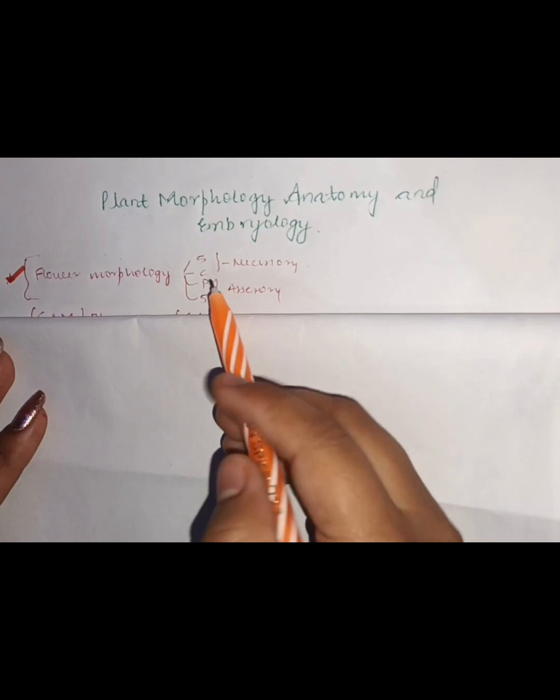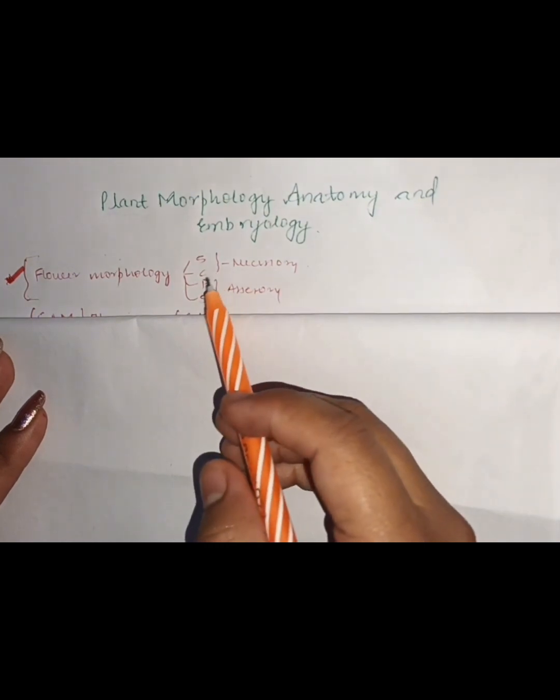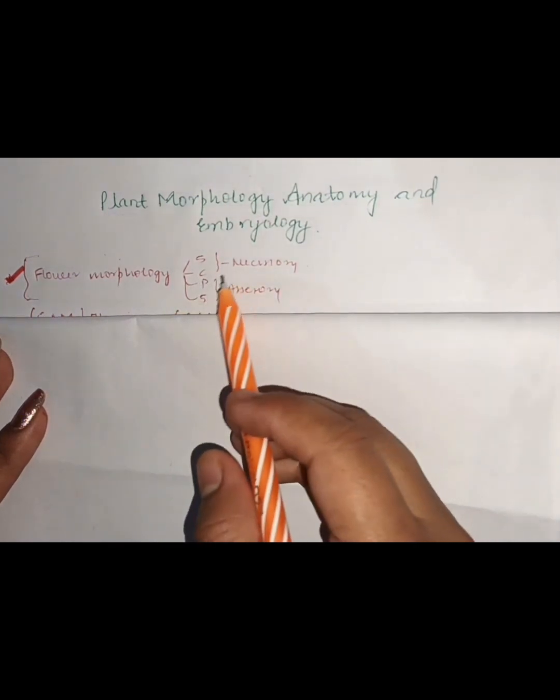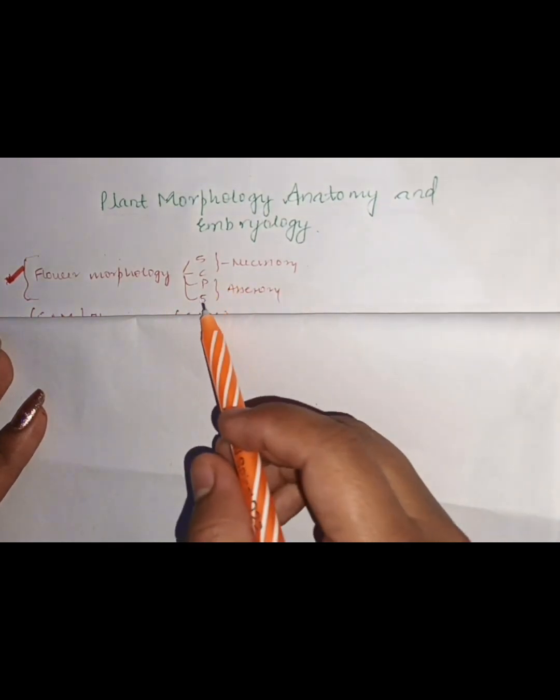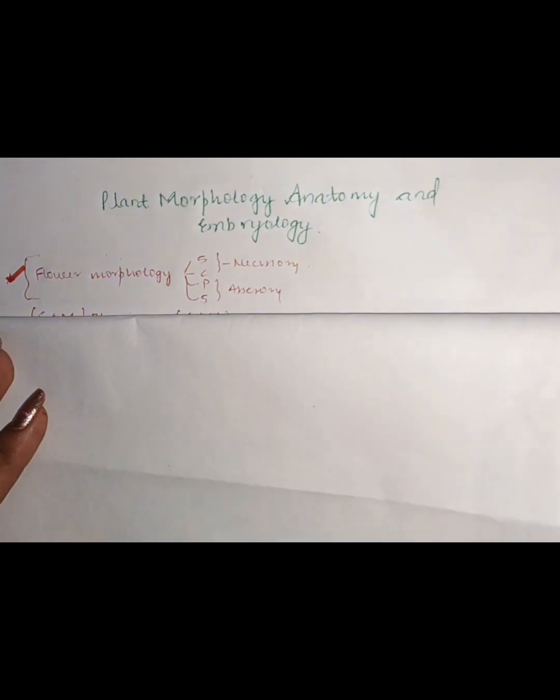Stamen and carpel. Stamen is the male reproductive part. Carpel is the female reproductive part. Remember: P for petal and S for sepal.